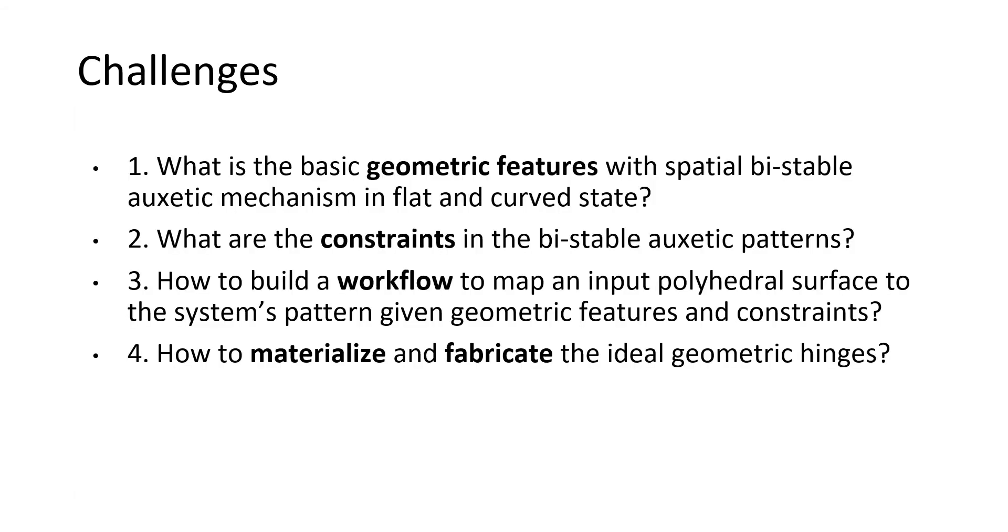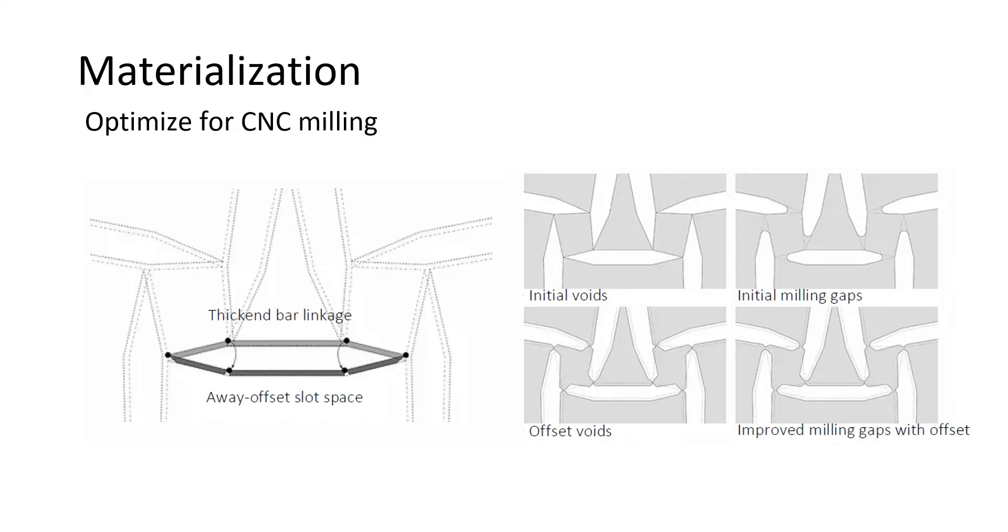The next challenge is to materialize this system. In the generated pattern, all the panels are connected through single line hinges. We need to care about the actual material thickness during the fabrication. When we use CNC milling to make the physical prototype, we find that the radius of the drill bits leads to round corners for accurate angles of the hexagons,